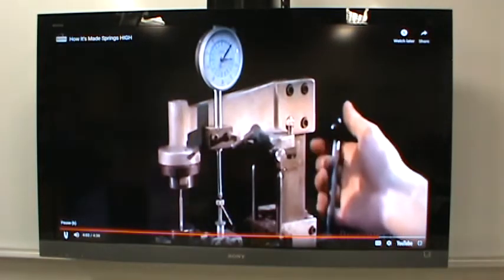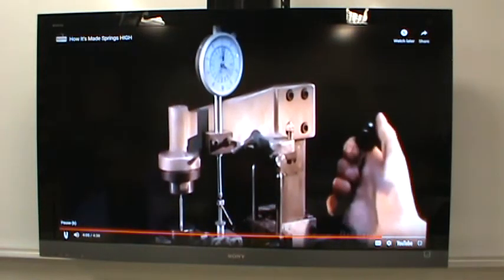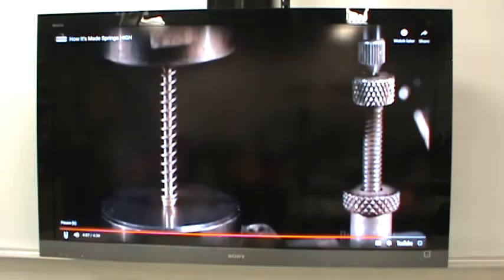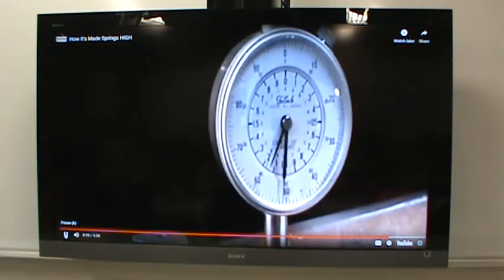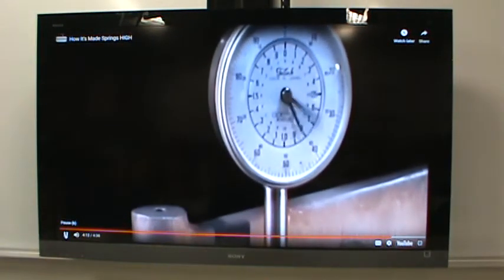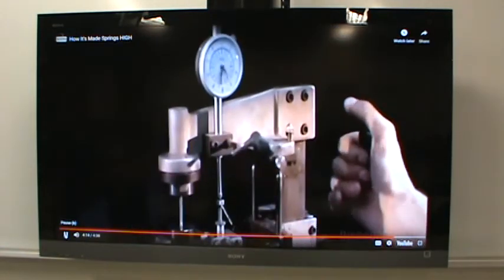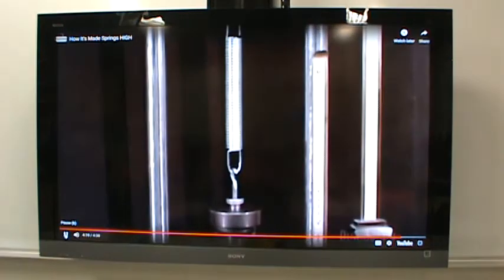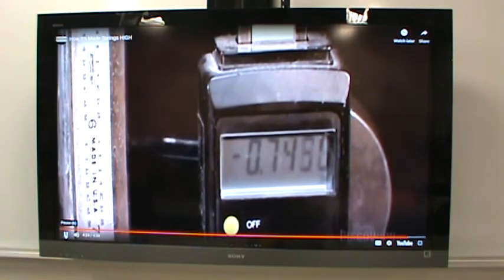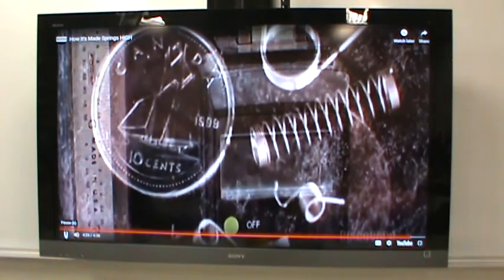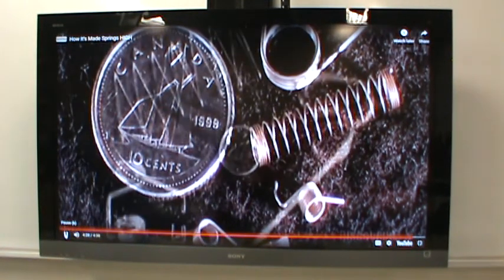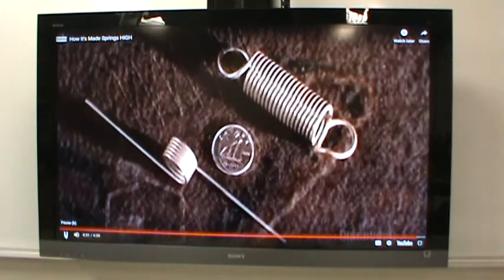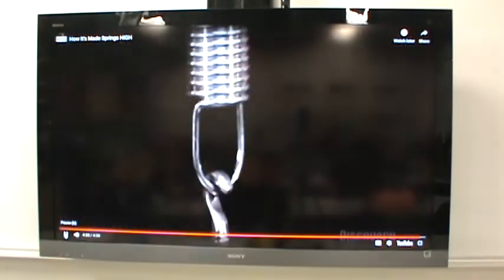To check the compression spring's tension, a worker tests it with a weight gauge. The correct tension varies depending on what the client wants. A 3.8 cm long spring, for example, might need to withstand 5 pounds of tension when compressed to 2.5 cm. To test an extension spring, workers just add hooks to the weight gauge. Whether they're extension, compression, torsion, or wire form, and whether they're inside pens or satellites, springs prove that some old ideas definitely still work.